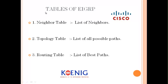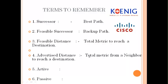EIGRP maintains three types of tables: the neighbor table (a list of all possible neighbors), the topology table (a list of all possible paths), and the routing table (a list of the best paths). The successor is the best path in the EIGRP world, and the feasible successor is the backup path. If a router has two possible paths to reach a destination, the metric calculation — a combination of bandwidth and delay — determines which path to take.